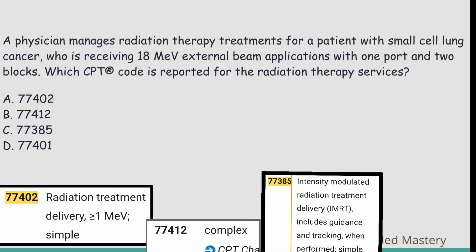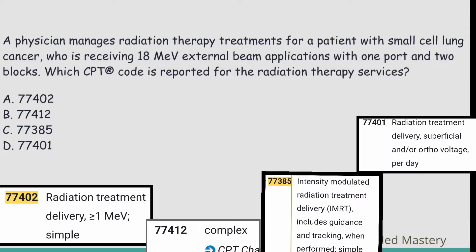Option C: 77385 — intensity modulated radiation treatment delivery, includes guidance and tracking when performed, simple. Option D: 77401 — radiation treatment delivery, superficial or ortho voltage, per day. The question mentions 18 MeV external beam with one port and two blocks. Which code is correct?